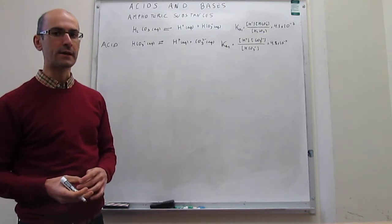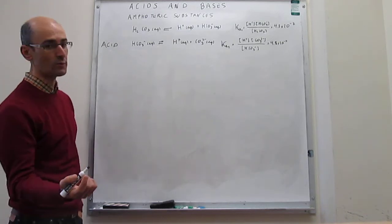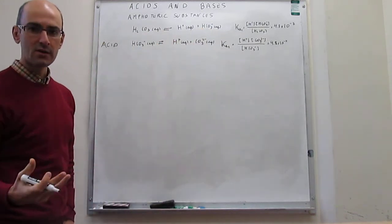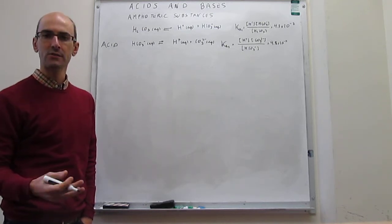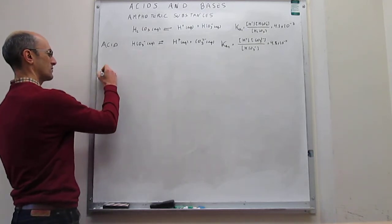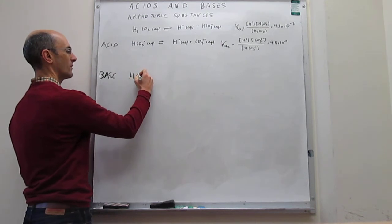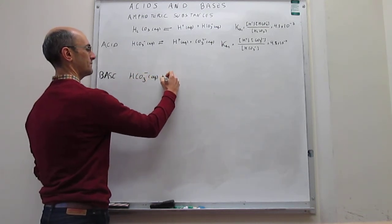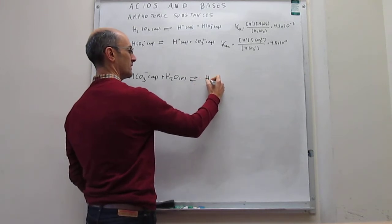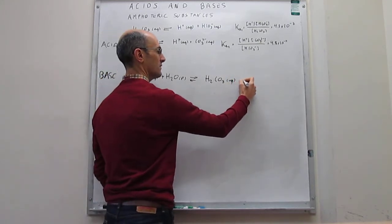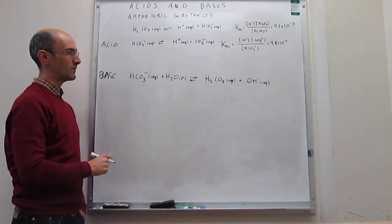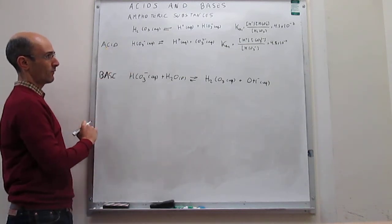What about the base properties of bicarbonate? Bicarbonate has base properties because it is the conjugate base of a weak acid. Being a conjugate base of a weak acid, it will have sizable base properties. To quantify those, we consider what happens when you put bicarbonate in water: it acts as a base, accepting a proton to generate carbonic acid and producing hydroxide. That is why it is a base — it produces hydroxide in water after accepting a proton from water.